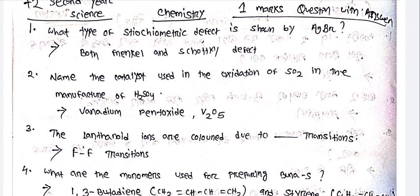What types of stoichiometric defect is shown by HgBr₂? It shows both Frenkel and Schottky defects.